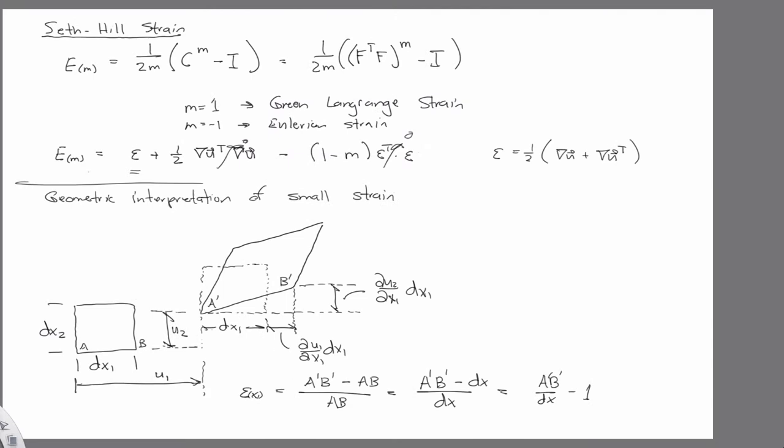So we have the original length dx1 right here. The original length dx1 plus partial u partial x1 dx, so that's the total length along the cosine of ab.